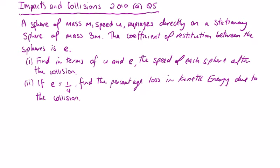2010 impacts on collisions, question 5a. A sphere of mass m at speed u impinges directly on a stationary sphere of mass 3m. The coefficient of restitution between the spheres is e. Find, in terms of u and e, the speed of each sphere after the collision, v1 and v2.